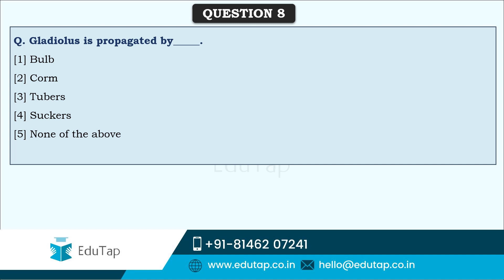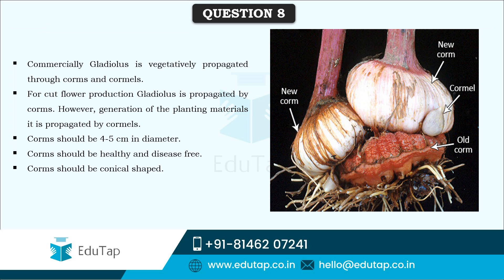Gladiolus, a type of cut flower, is propagated by corms. Corms are similar to bulbs — they are underground stems where food is stored by the plant during the dormant season. Once dormancy ends, the plant uses this stored food to grow into a new plant. Gladiolus is commercially propagated through vegetative propagation, specifically through corms and cormels.